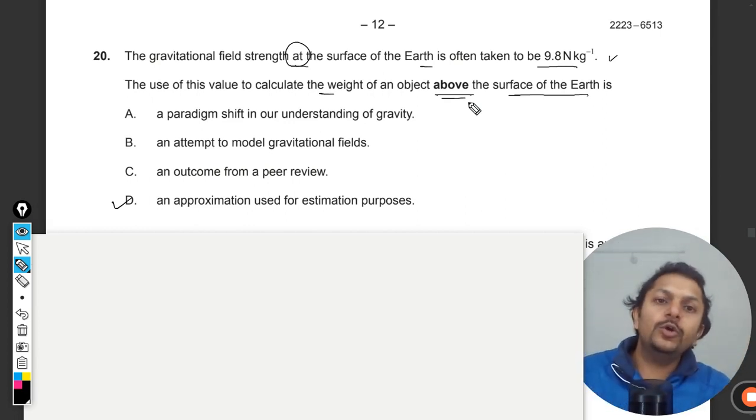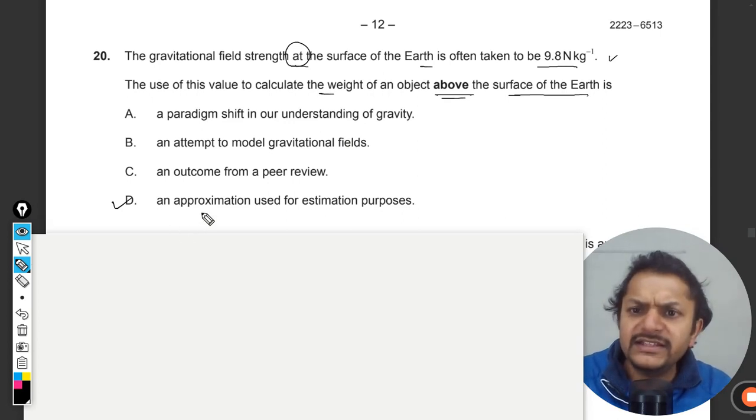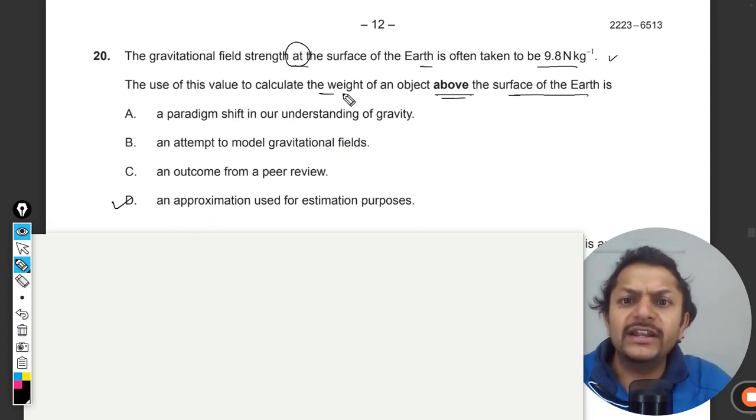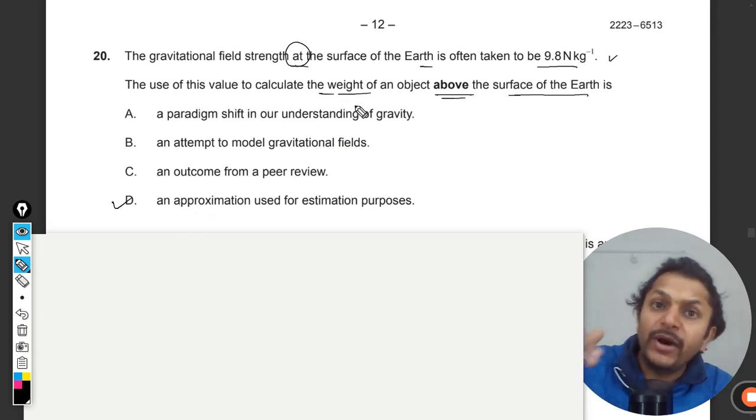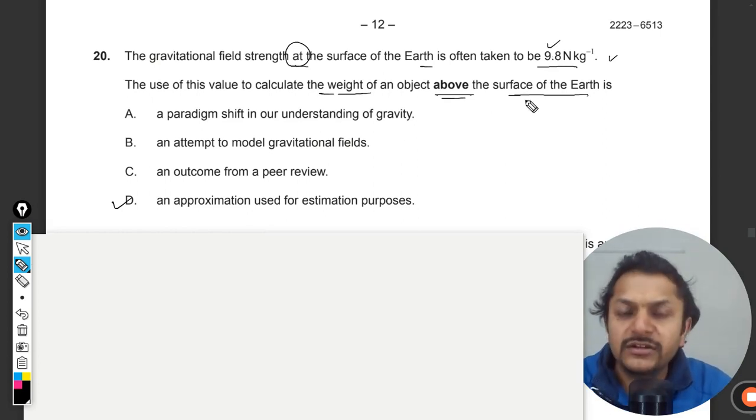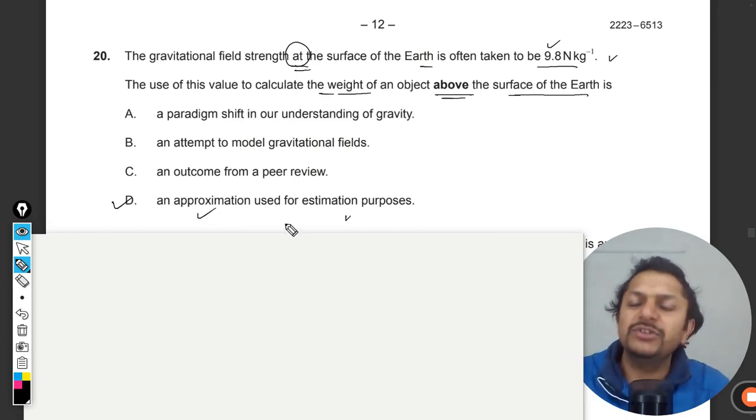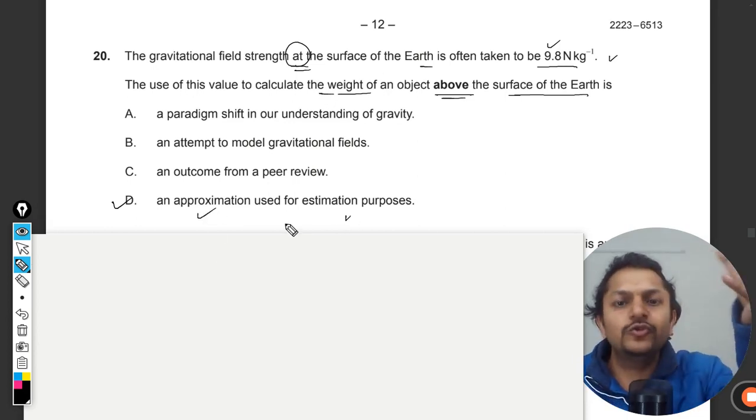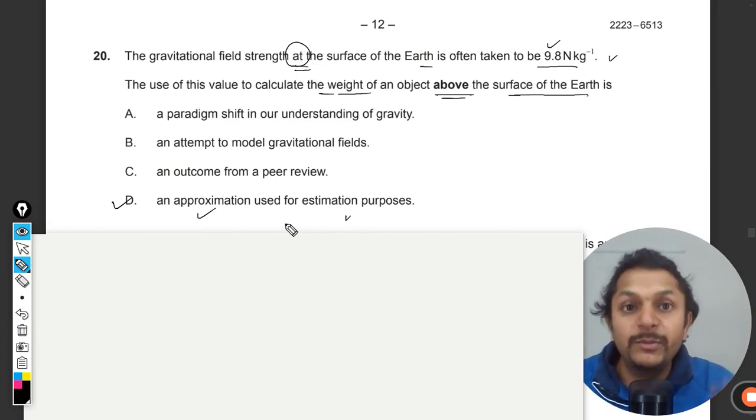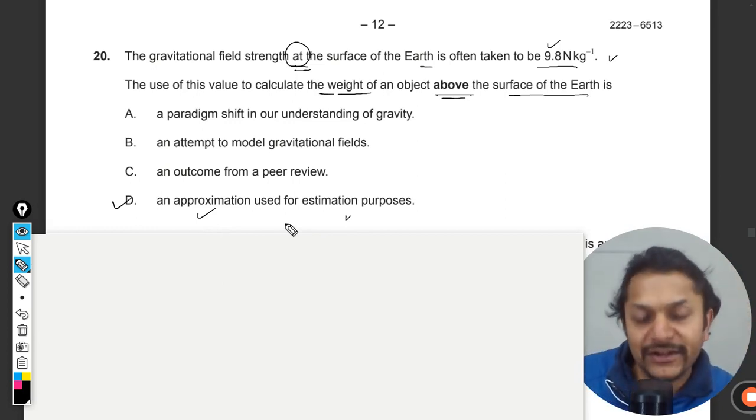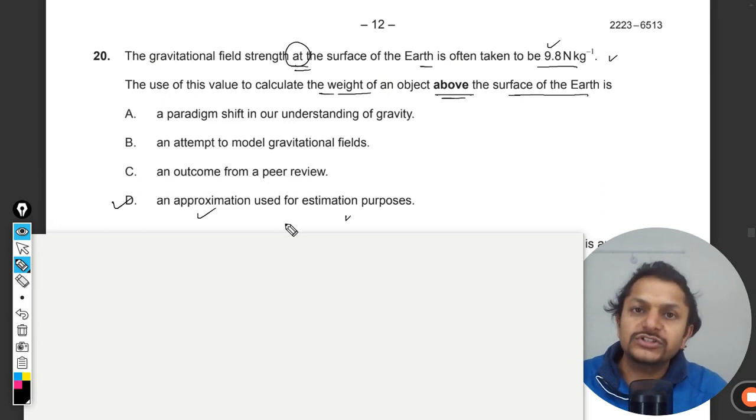So we can clearly say that if you want to find the weight of an object above the surface of the Earth and you are still using 9.8, which is the gravity only at the surface of the Earth, clearly it is an approximation used for estimation purposes only. That much should be the force with which the Earth will be pulling you towards the center of the Earth.